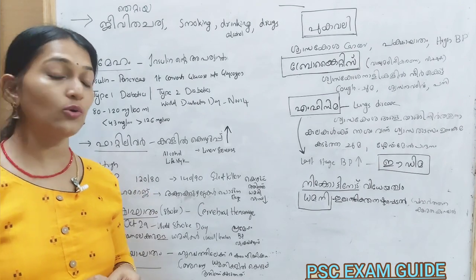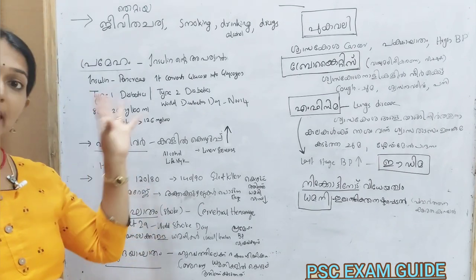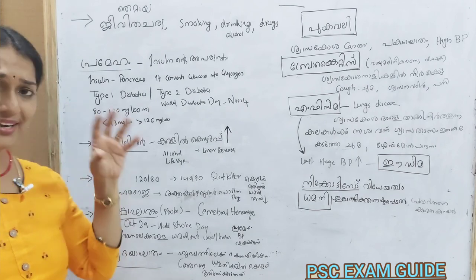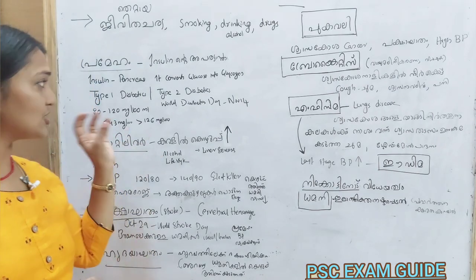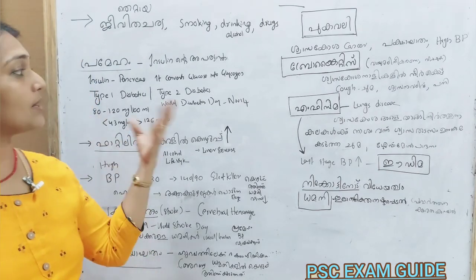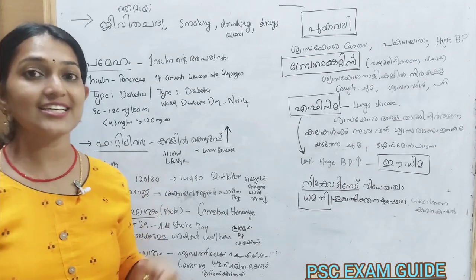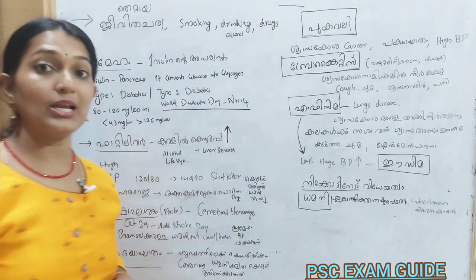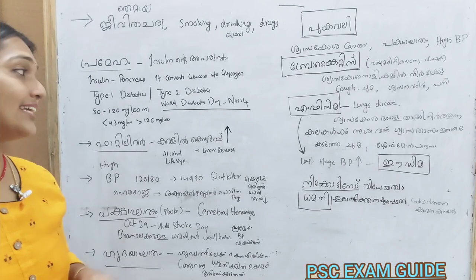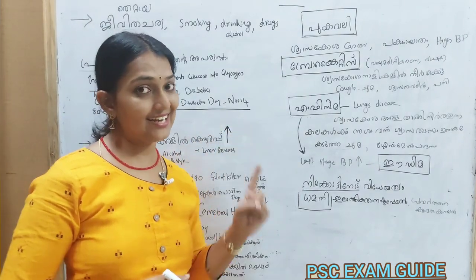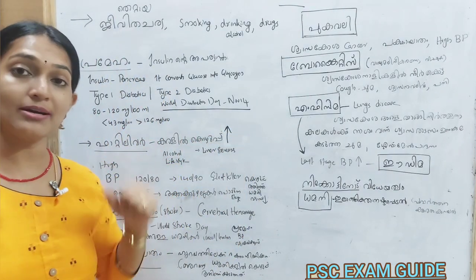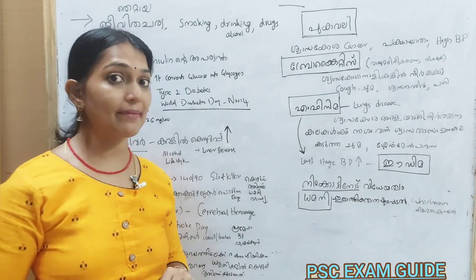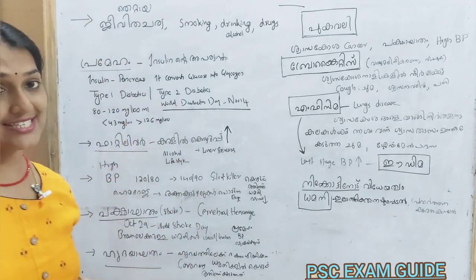Number 2: Prameha has Type 1 and Type 2. Type 1 and Type 2 are different forms of the disease. World Diabetes Day is observed on November 14th.